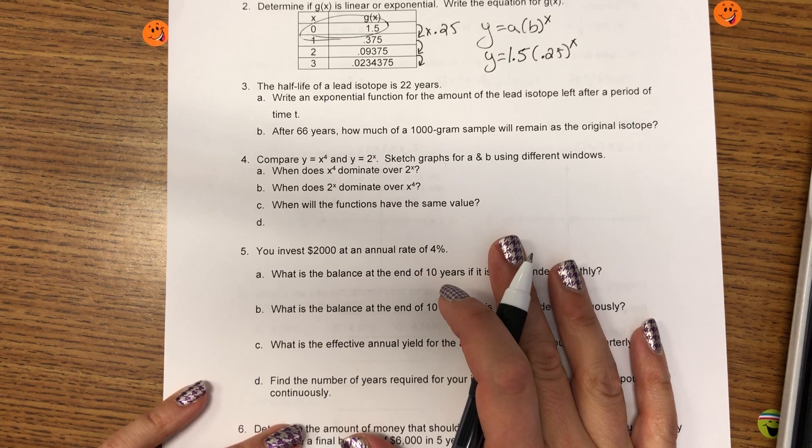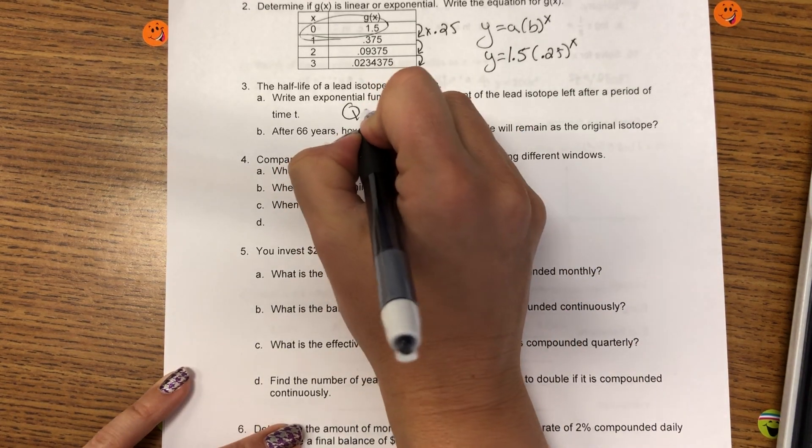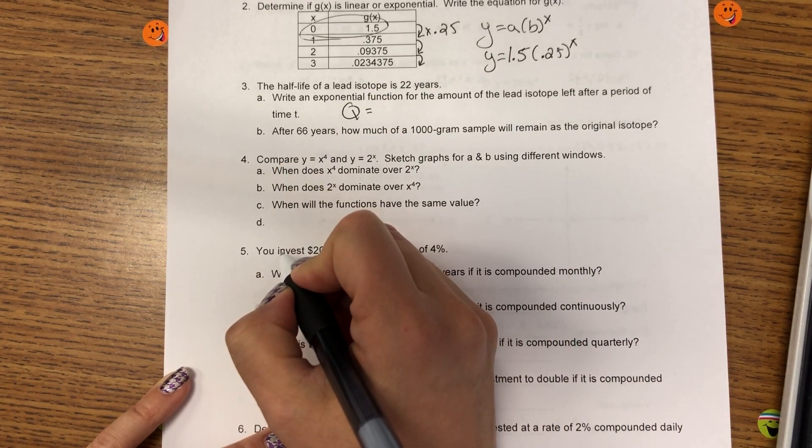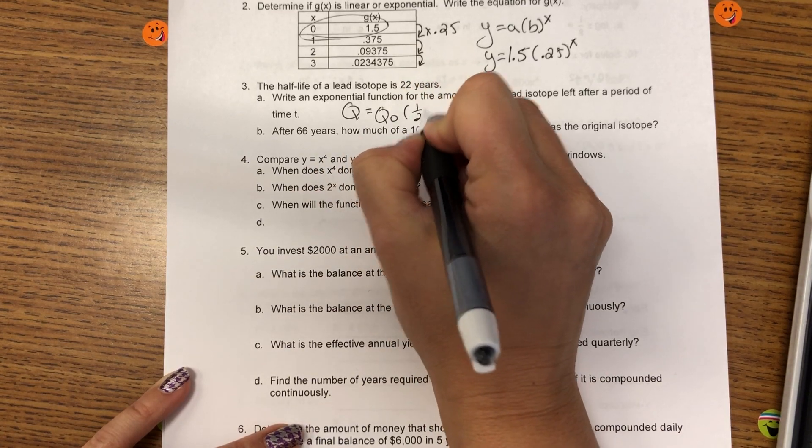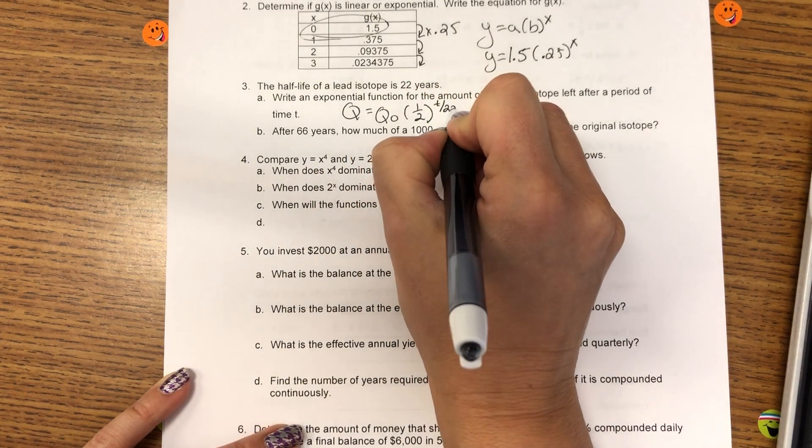In an exponential function, that is the B value, as long as X's are going up by 1. The A value is the initial amount when X is 0, which is 1.5.